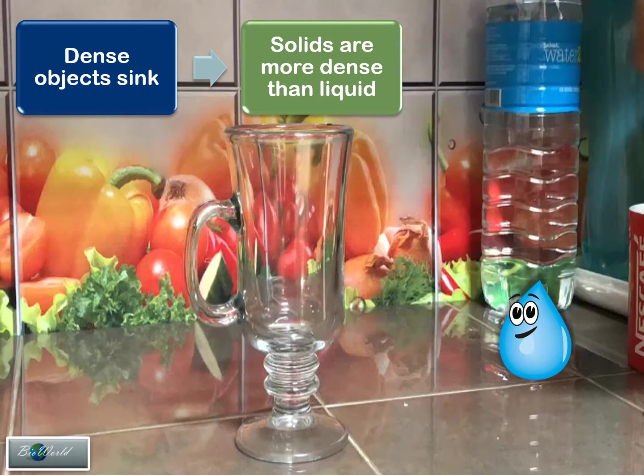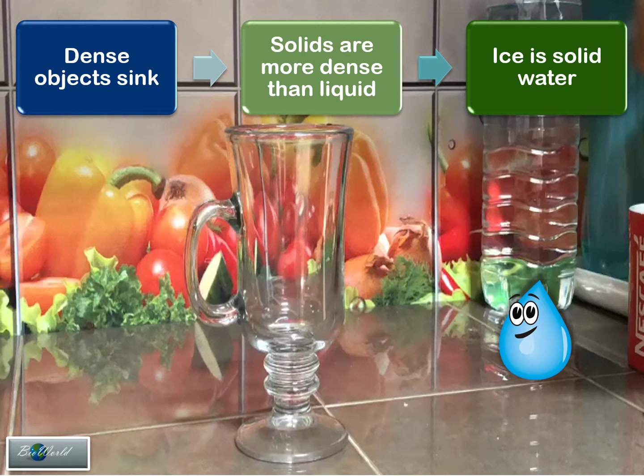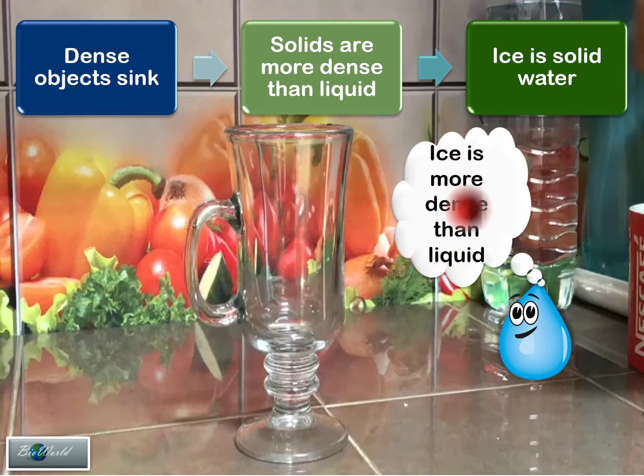Third fact is ice is an example of solid water. So based on these three concepts, we can make a conclusion that since ice is solid water, ice should be more dense than liquid, and that would mean ice should sink.